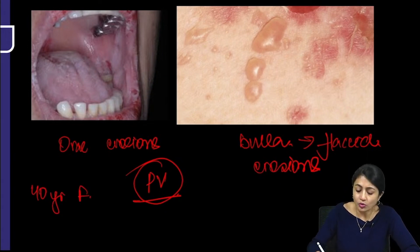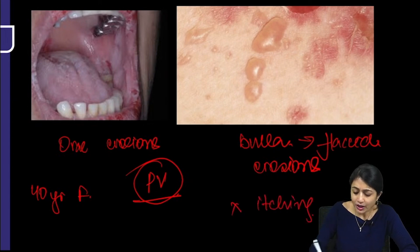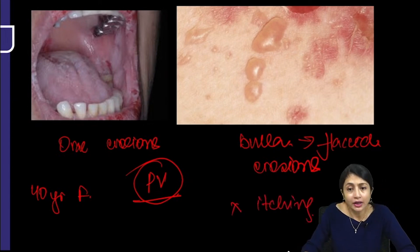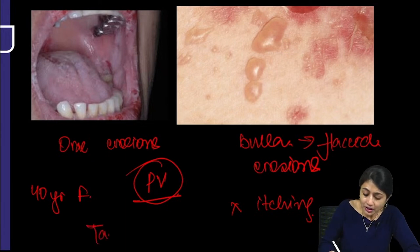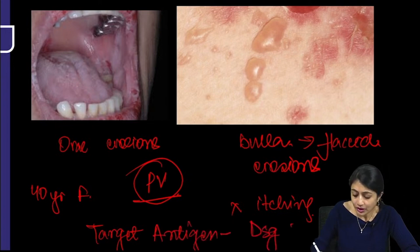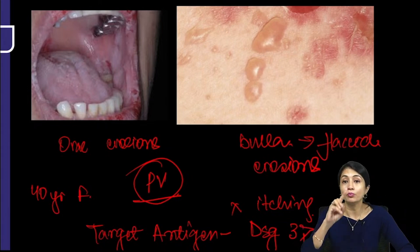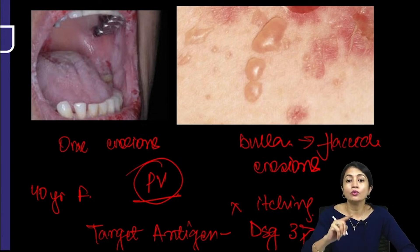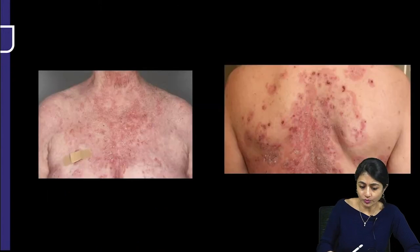Are these lesions itchy? Usually there will be no itching. They can be located anywhere on the body. The diagnosis is pemphigus vulgaris. They can ask you what is the target antigen — desmoglein 3 and desmoglein 1. Both can be the target. However, if desmoglein 3 and 1 are given as different options, then you mark desmoglein 3.